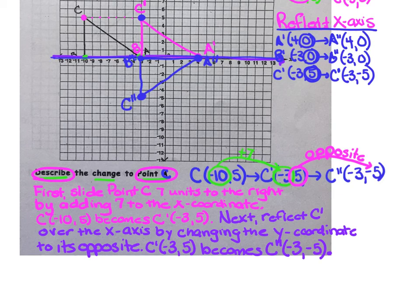Your response should sound a bit like this. First, slide point C seven units to the right by adding 7 to the X coordinate. Next, reflect C prime over the X axis by changing the Y coordinate to its opposite. C prime, negative 3, 5 becomes C double prime, negative 3, negative 5.